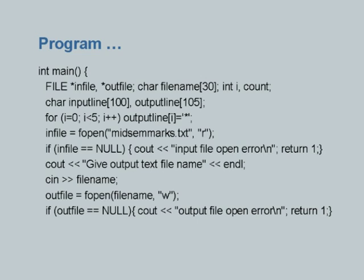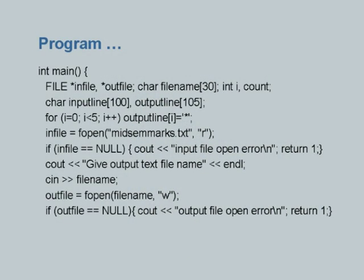Again I assign the returned pointer to outfile and check whether it is null. The file might fail to open even for writing — for example, if the disk quota is full. If outfile is null, I take the appropriate action and exit. By this point both files are opened correctly, and the first five positions of output_line are initialized to stars.